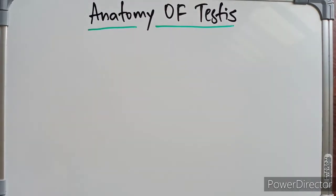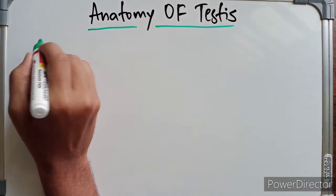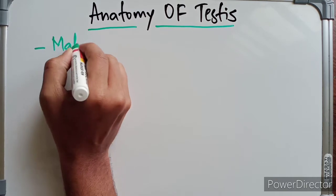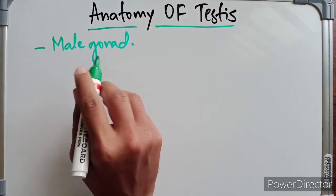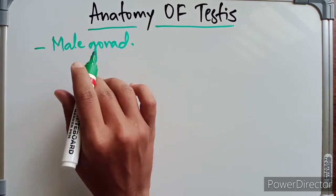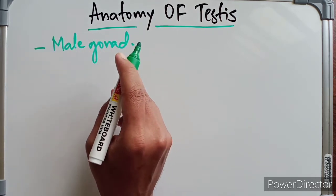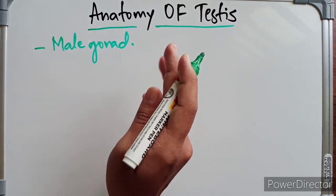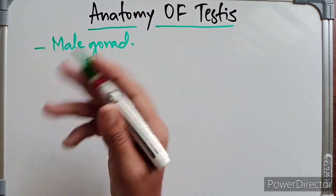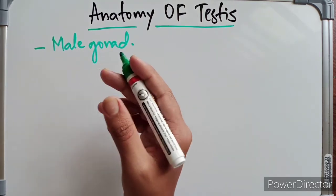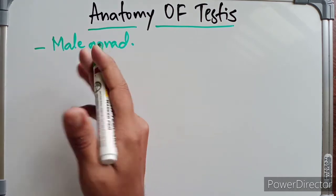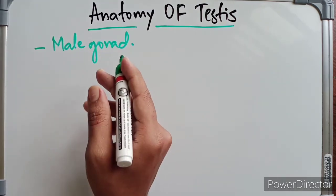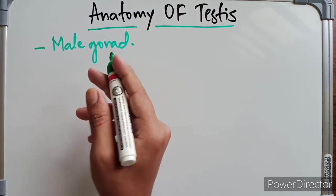Welcome to Med 10. In this video we are going to look at the anatomy of the testis. The testis is a male gonad, homologous with the ovary in the female. It is a mobile organ and lies in each half of the scrotal sac. Its functions include the production of spermatozoa and secretion of testosterone, also called dihydrotestosterone, which is a male hormone responsible for the development and maintenance of the secondary sex characters.